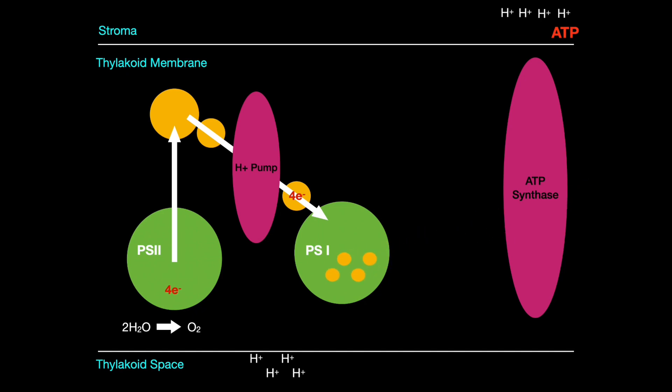Photons of light are also absorbed by chlorophyll in photosystem 1. Again this excites the electrons from the chlorophyll to a higher energy state and again they're captured by an electron acceptor. The de-energized electrons from photosystem 2 replace the electrons lost from photosystem 1.